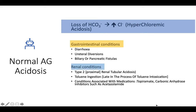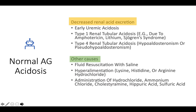NAGMA can also occur with certain medications such as topiramate or carbonic anhydrase inhibitors like acetazolamide, which cause bicarbonate loss compensated by hyperchloraemia. Decreased renal acid excretion is another cause, seen in early uremic acidosis, Type 1 renal tubular acidosis due to amphotericin or lithium, Sjögren's syndrome, and Type 4 renal tubular acidosis due to hypoaldosteronism or pseudohypoaldosteronism. In these cases, decreased bicarbonate excretion results in a relatively normal anion gap.